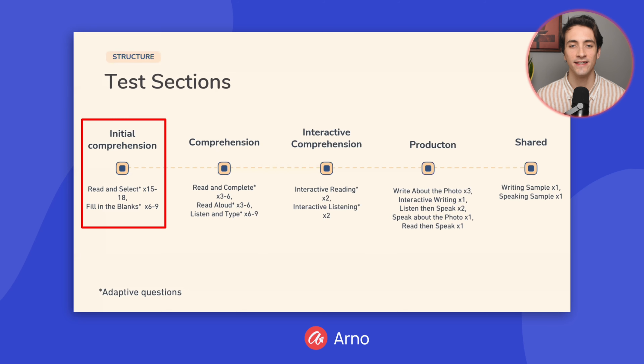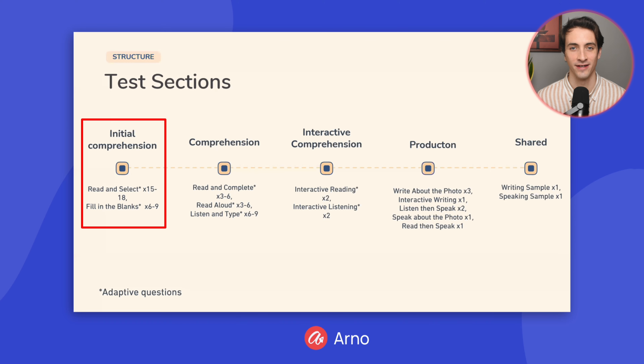In this lesson, we are going to cover all 19 question types that you will see on the Duolingo English Test. The DET is structured as five sections. We are going to start with the first section, Initial Comprehension, which has two question types.